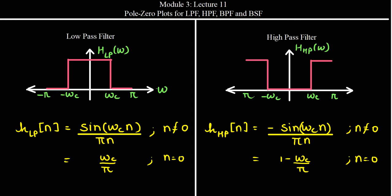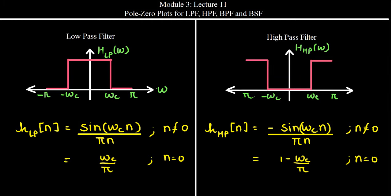We saw that the typical frequency response for a low pass filter is equal to 1 for the frequency range of minus omega_c to omega_c, where omega_c is the cutoff frequency. Its time domain equivalent is given as h_lp = sin(omega_c * n) / (pi * n) for n not equal to 0, and it is equal to omega_c / pi for n equal to 0.